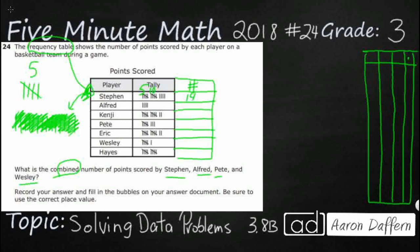So Alfred is not quite five, it's one less. Our brains can count that four pretty easily. Kenji, we've got two groups of five, so I'm going to write over it, five, ten, and then we've got two more, so that's going to be twelve. Pete has got five and three more, so that's going to be eight.